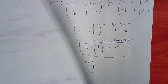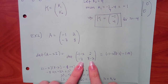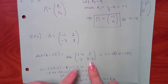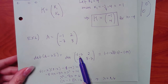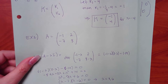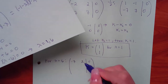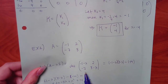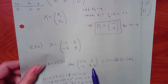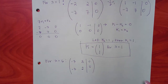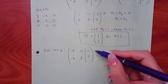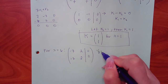For lambda equal to 6: go back to the matrix with minus lambdas and plug in 6. Negative 1 minus 6 is negative 7; the twos stay the same; negative 7 stays; 8 minus 6 is 2.